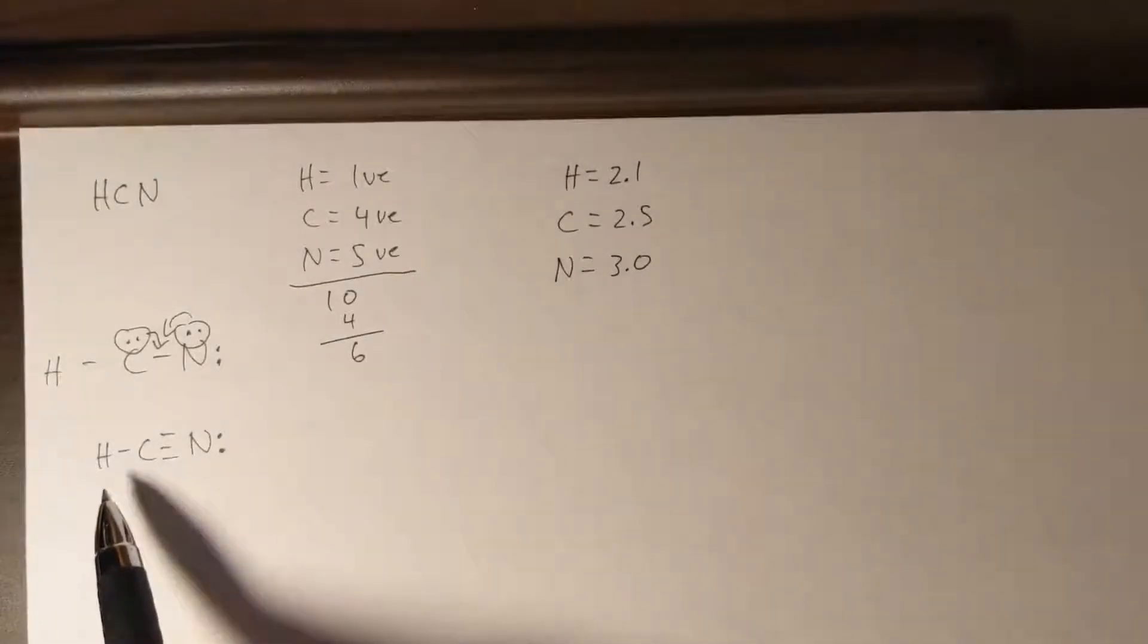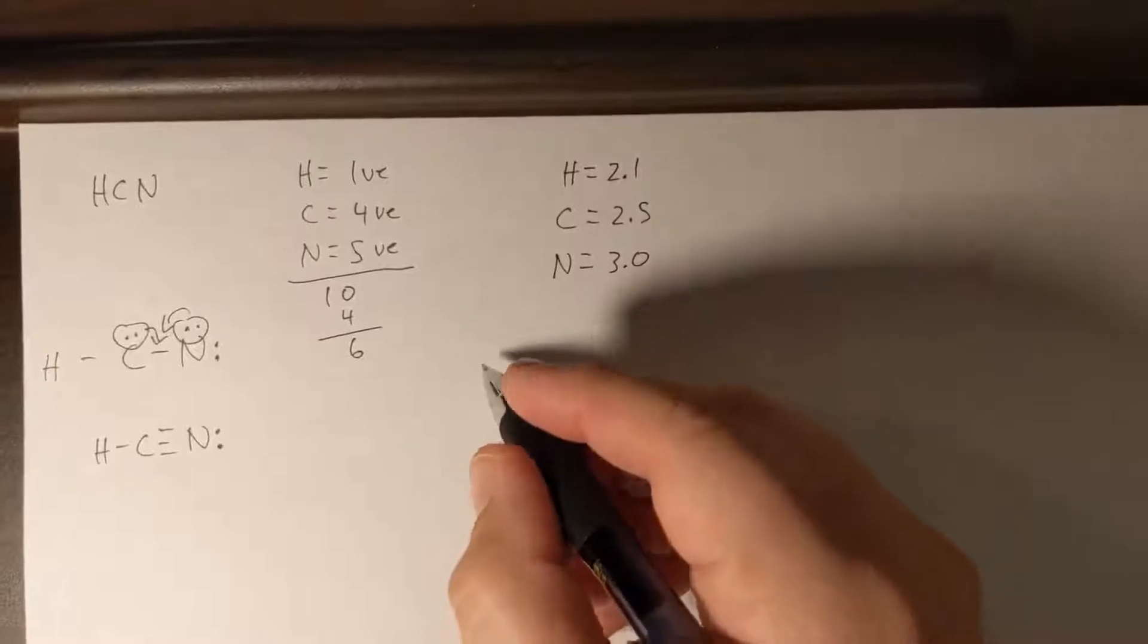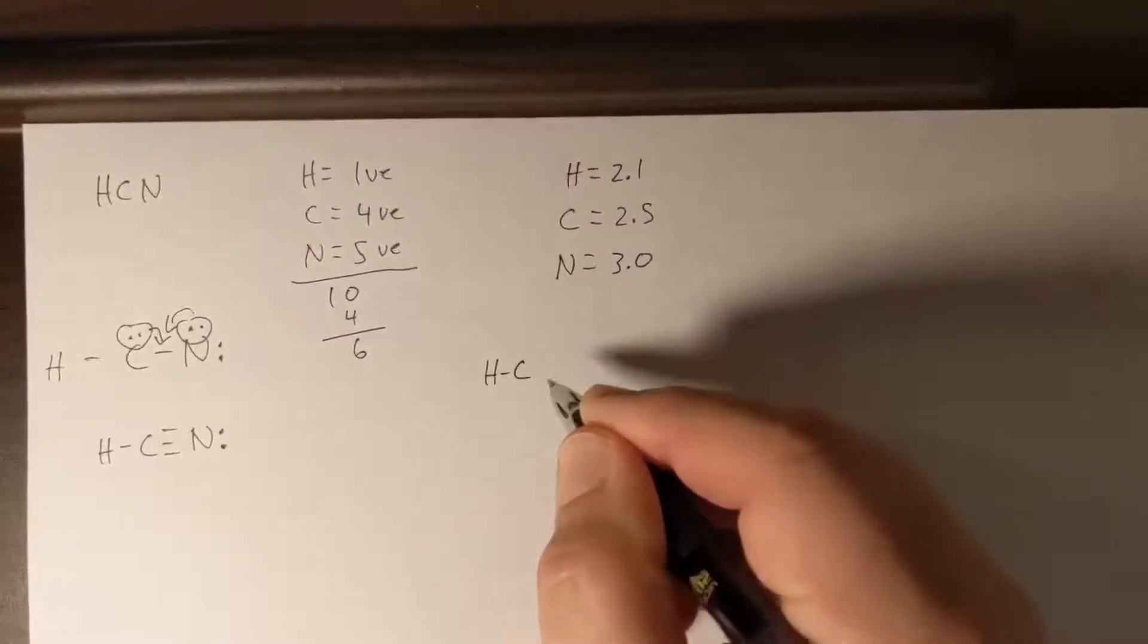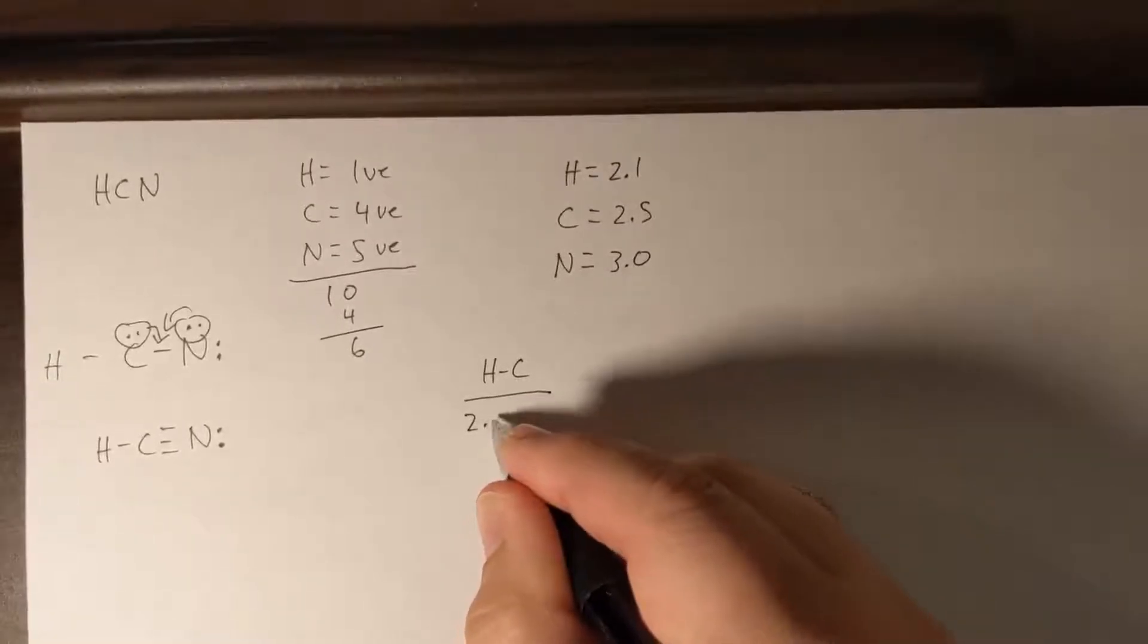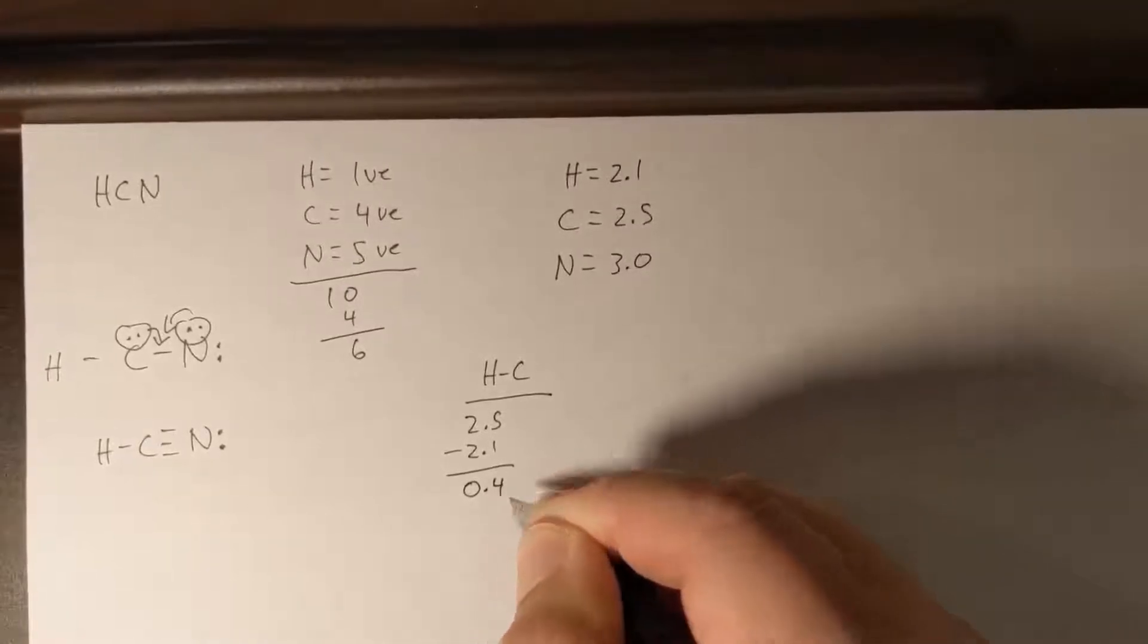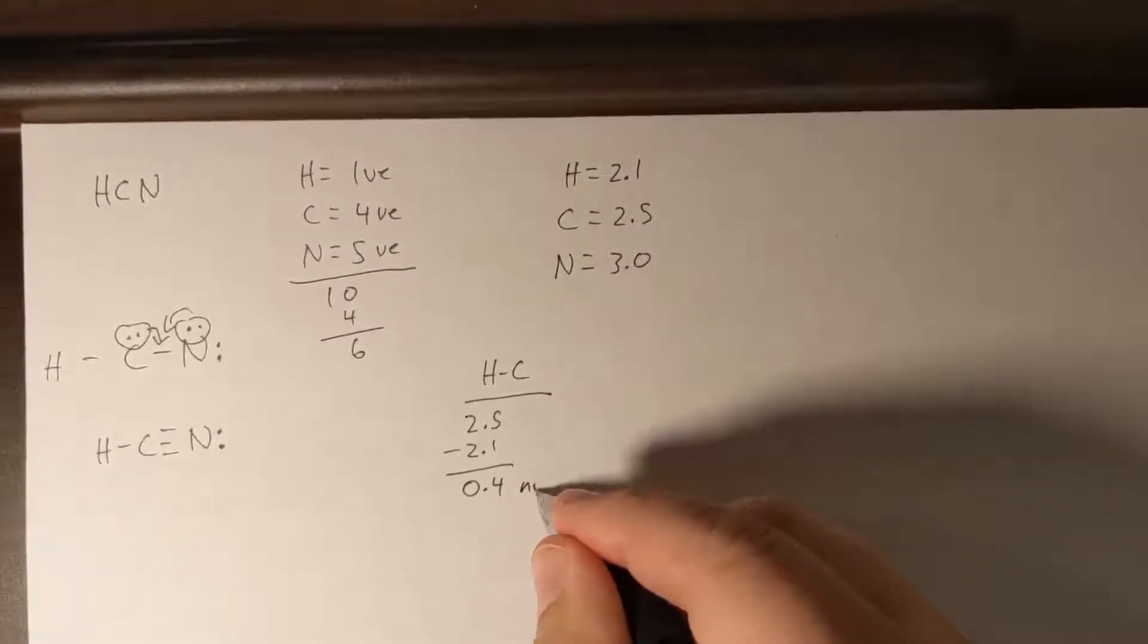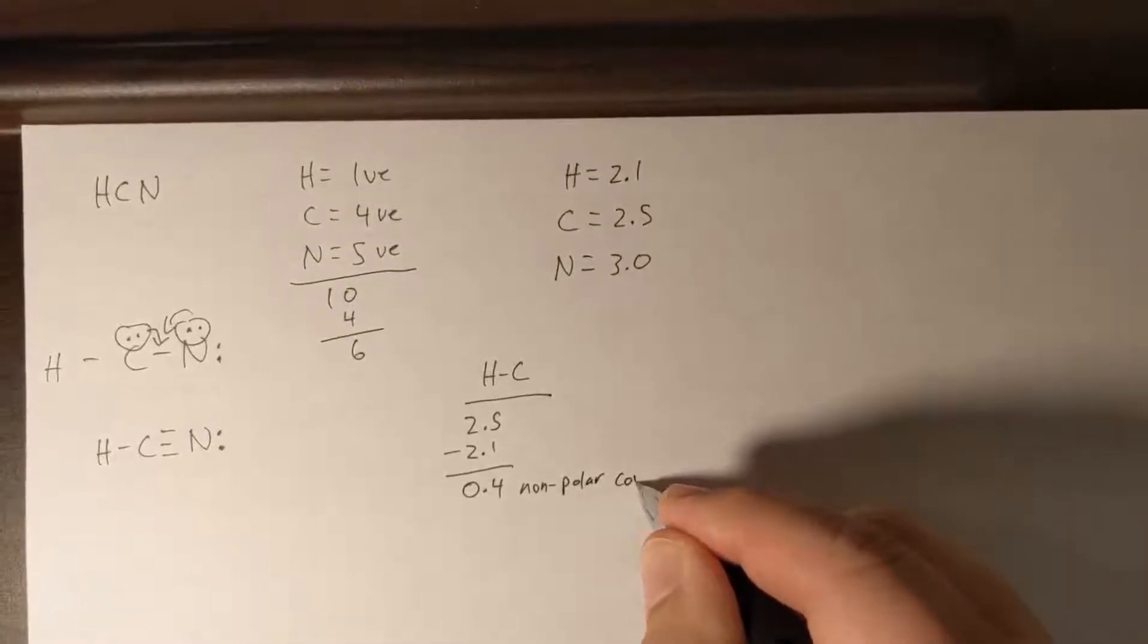So let's do our hydrogen carbon bond first and see what type of bond that is. So just to keep our label here, this will be our HC bond, and so we'll have 2.5 minus 2.1 will give us 0.4. So that's a nonpolar covalent bond.